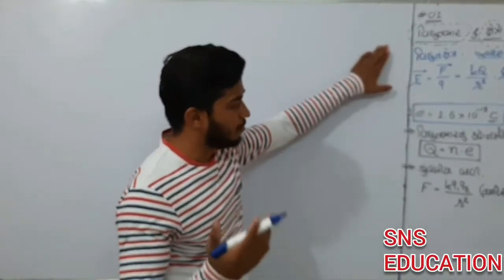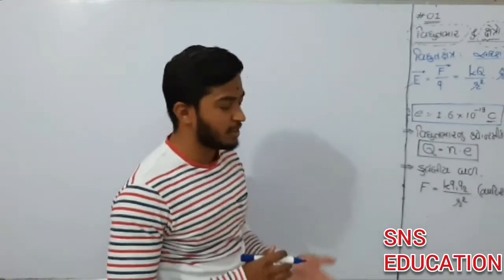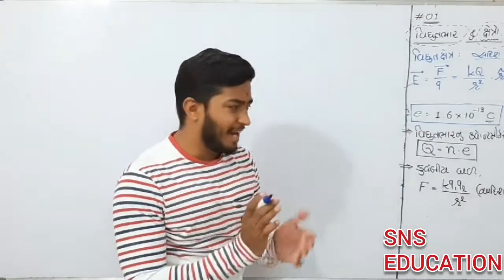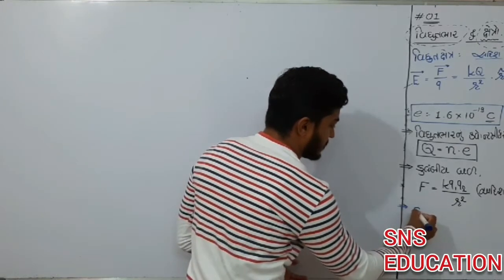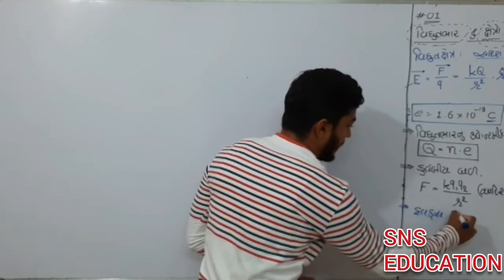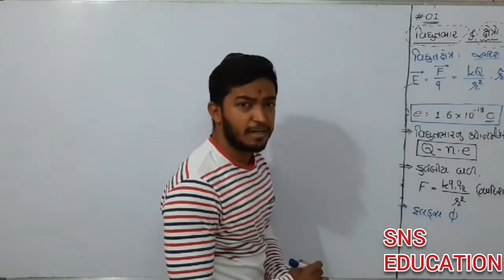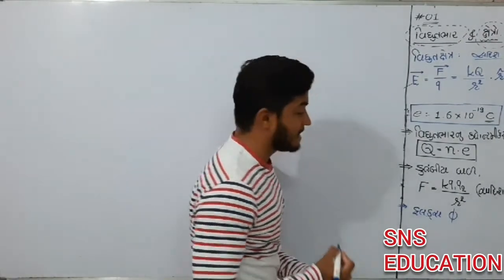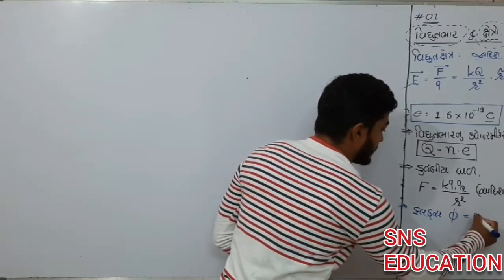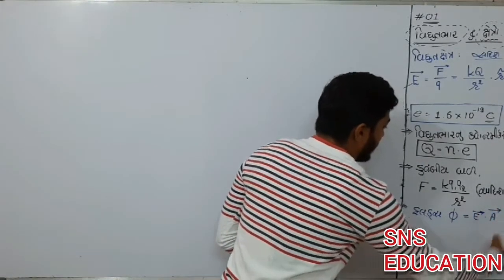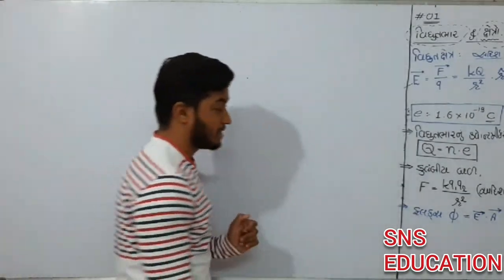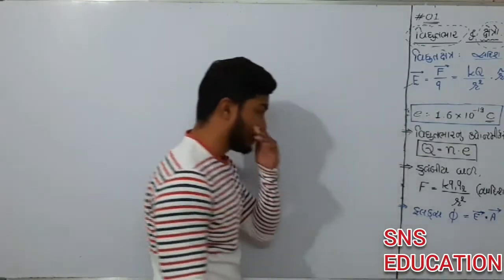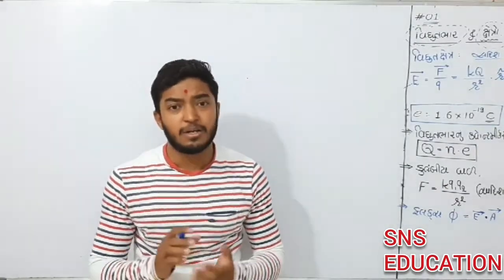Chapter number 8, we are going to start. At the end of that, we are going to get the flux. We will get flux in phi, that is indicated. Phi is equal to E into A. E is the electric field. Then we will get the dot product. Phi is equal to E into A cos theta.